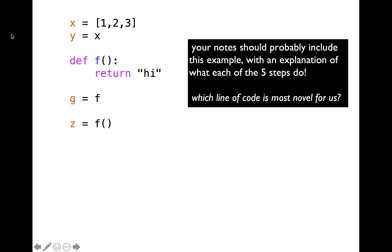Let's consider a simple example. I have an example up on the slide. Go ahead and pause the lecture video and go through this example step by step. Keep writing down the observations you make about objects and references created for each line of code. Then try to identify which line of code is radically different compared to other function examples we have covered. Once you identify that line, leave a comment in the comment section stating which line you identified.